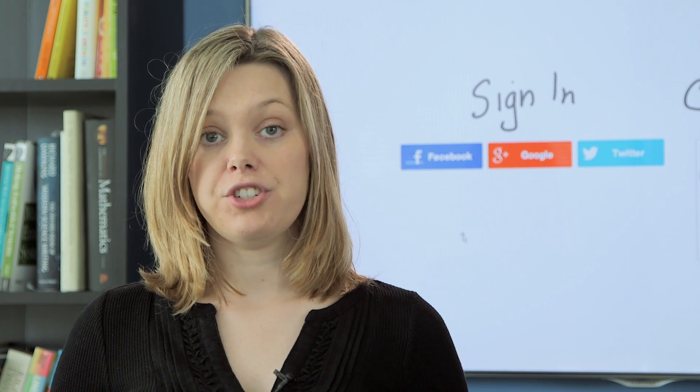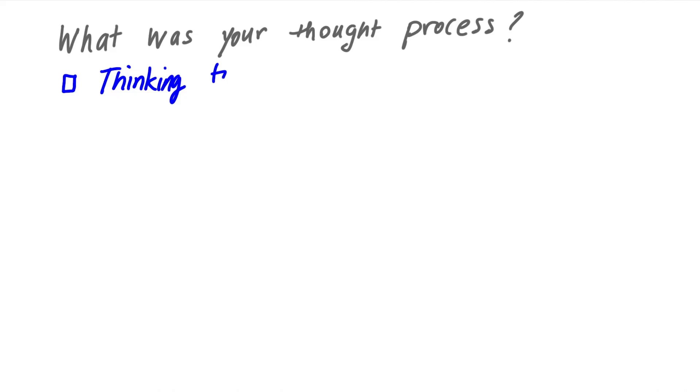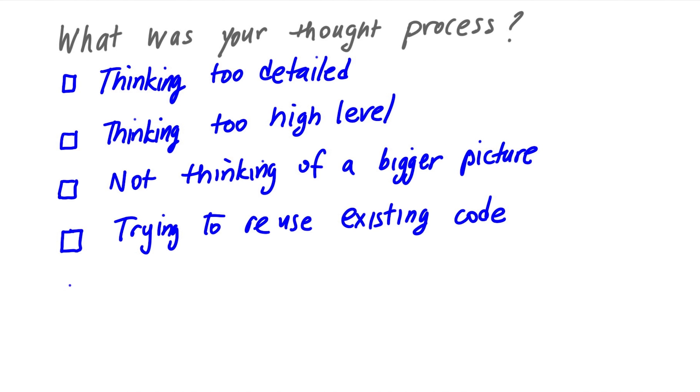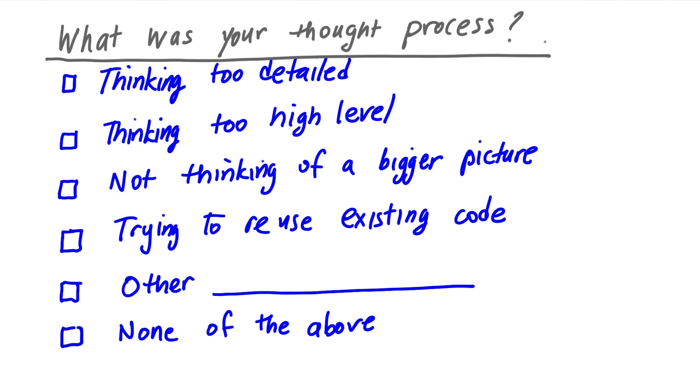If your first instinct was to optimize locally and not to just replace sign-in and checkout with one of these solutions, what was your thought process? Were you thinking too detailed? Were you thinking too high level? Were you not thinking of the bigger picture? Were you trying to reuse existing code? Or is it something else or none of the above? Check all that apply.